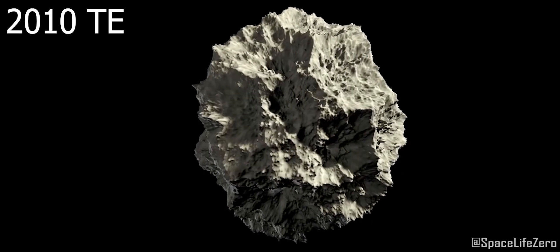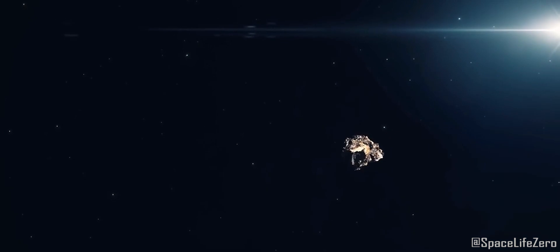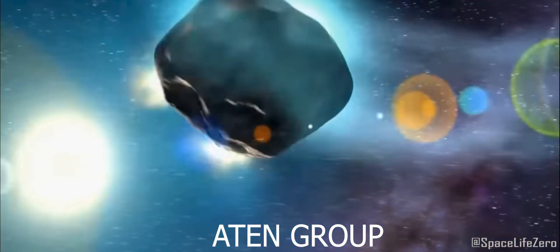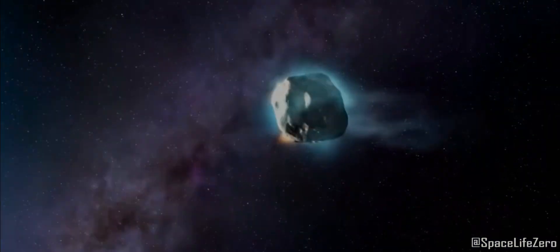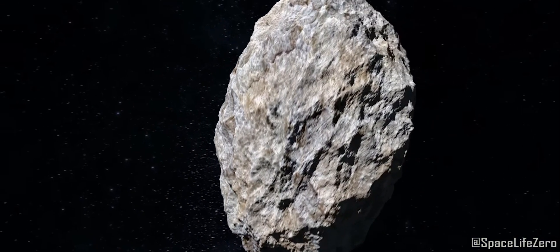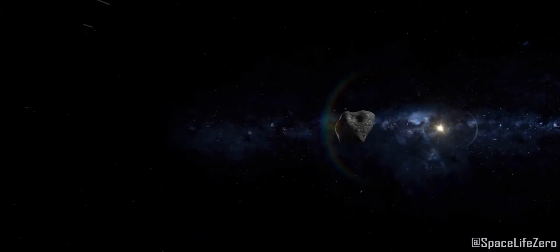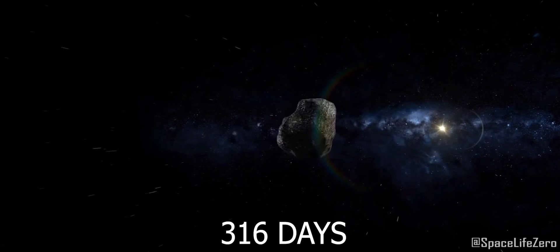Asteroid 2010-TE was first discovered on October 1, 2010, and it belongs to the Aten Group of Asteroids. This near-Earth object has an average estimated diameter of 73.5 feet and makes one orbit around the Sun in 316 days.